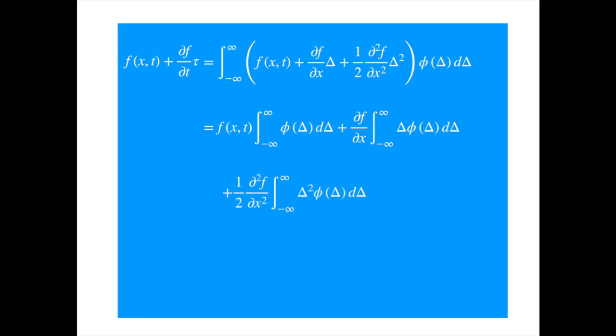We can now expand the terms on the right hand side. By the way, f doesn't depend on delta, so we can take it out of the integral. Now because the probability of displacement is symmetric around 0, the negative and positive displacements are equally likely, which means the second term is 0. And we know the total probability is equal to 1, so if you integrate the density over the whole line, you should get 1.